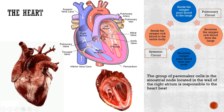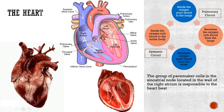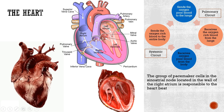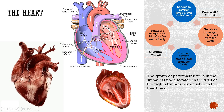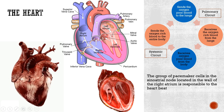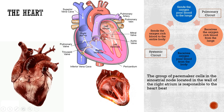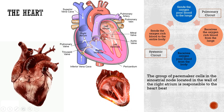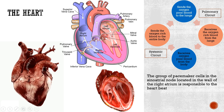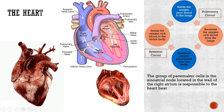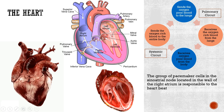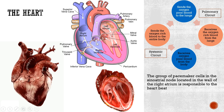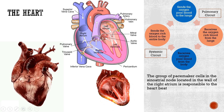The right and left sides of the heart work together. On the right side, oxygen-poor blood from the body enters the right atrium through two large veins: the inferior vena cava and the superior vena cava. The tricuspid valve forms the boundary between the right atrium and right ventricle. When the right atrium contracts, the tricuspid valve opens and blood is pumped into the right ventricle. When the right ventricle contracts, the tricuspid valve closes and blood is pumped out through the pulmonary valve and carried to the lungs through the pulmonary artery.